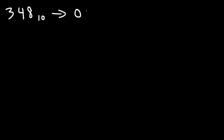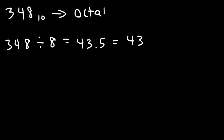Now let's convert 348 into an octal number in the base eight system. In the previous example we divided by two because binary is a base two system. The octal system is base eight, so we divide by eight. Taking 348 divided by eight gives 43.5, so it's 43 remainder four — multiply eight by 0.5 to get four.